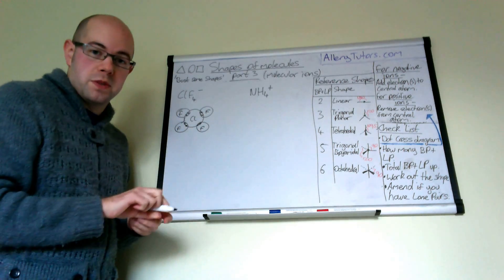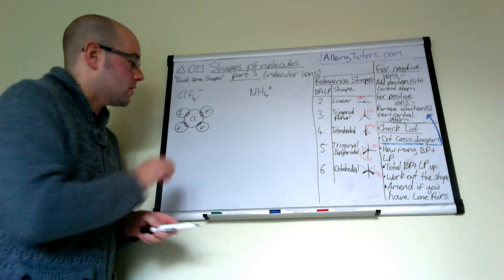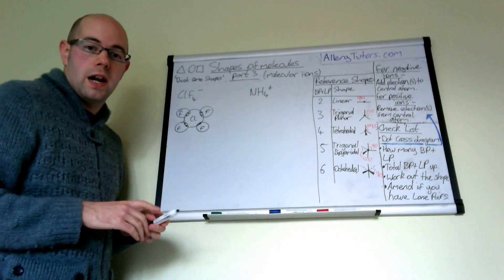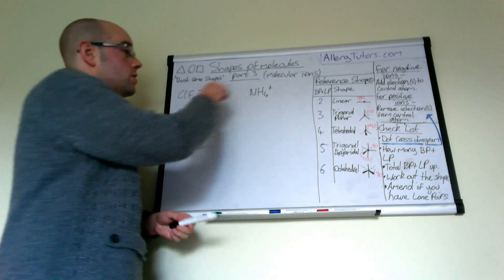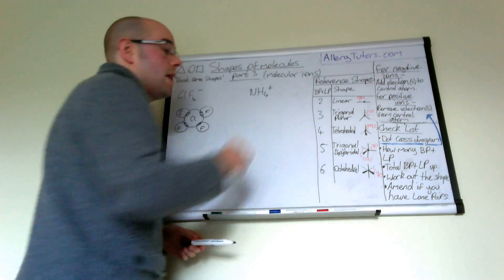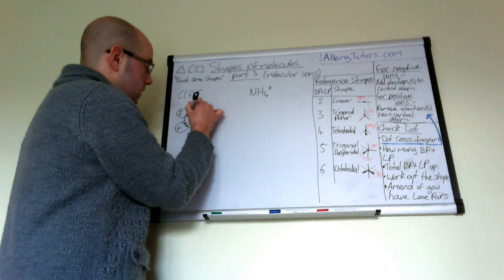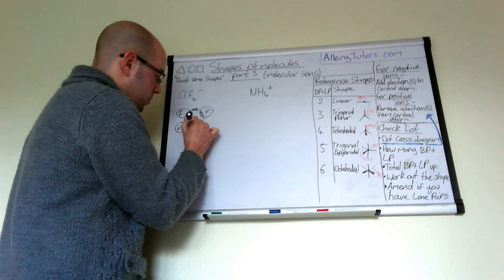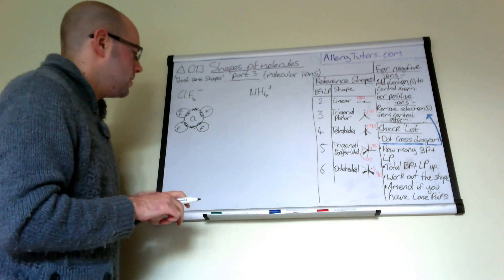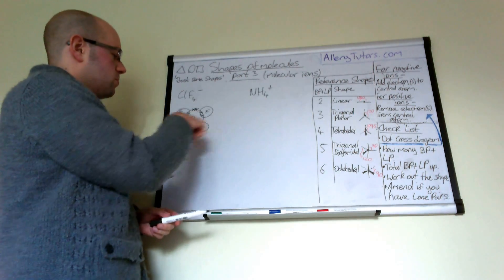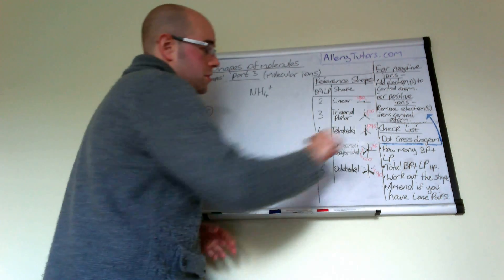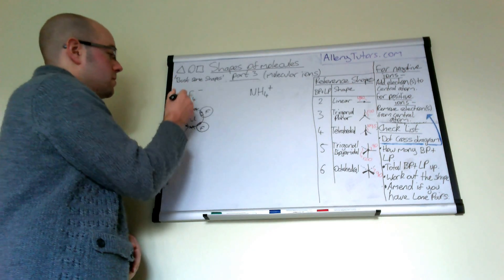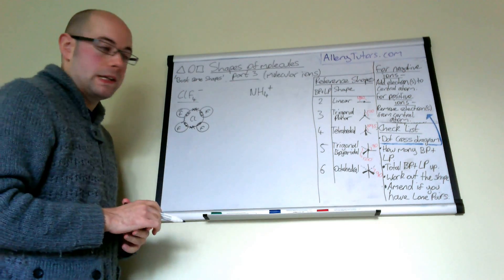That's four electrons taken up, which means that chlorine would actually have four electrons left — and that includes the extra one we've had to add. Because it's got four, they will pair up: one pair up there and one pair there. So this is the dot cross diagram for CLF4⁻.